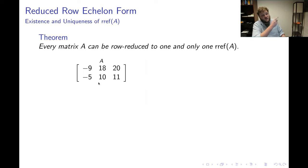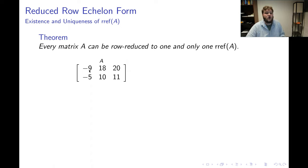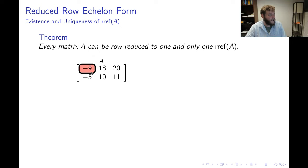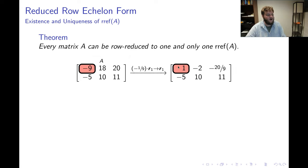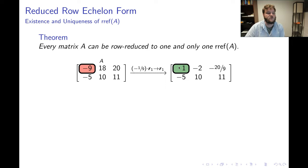This matrix is clearly not in reduced row echelon form — in the upper left-hand corner I have a 9 and not a 1. I would like the upper left-hand corner to equal 1, and I can accomplish this by scaling the first row by negative 1/9. That produces a 1 in the (1,1) position of my matrix, which will be my first pivot.